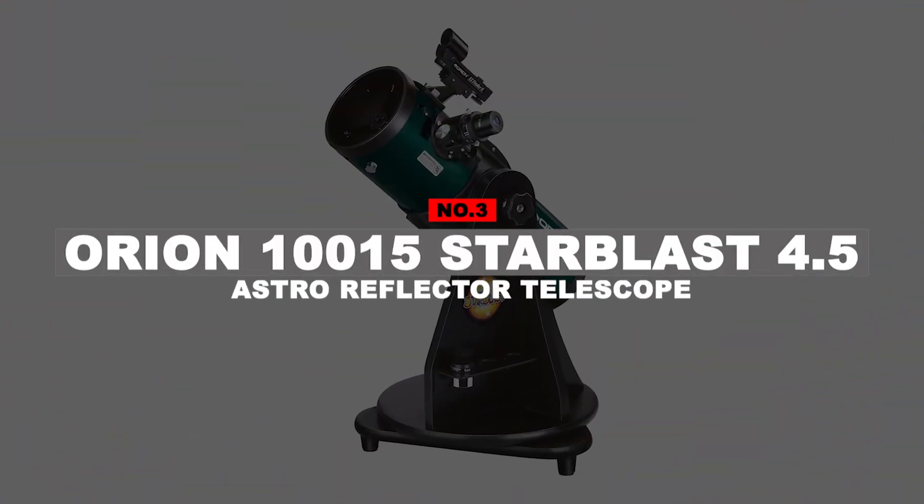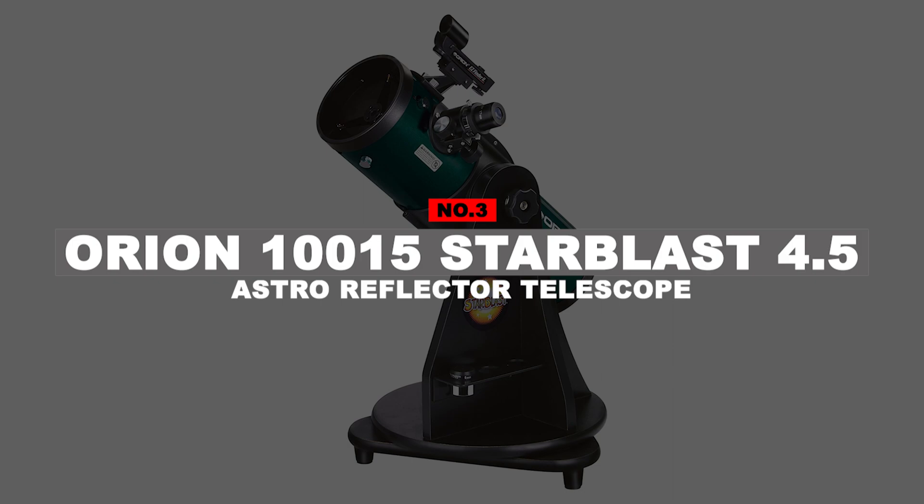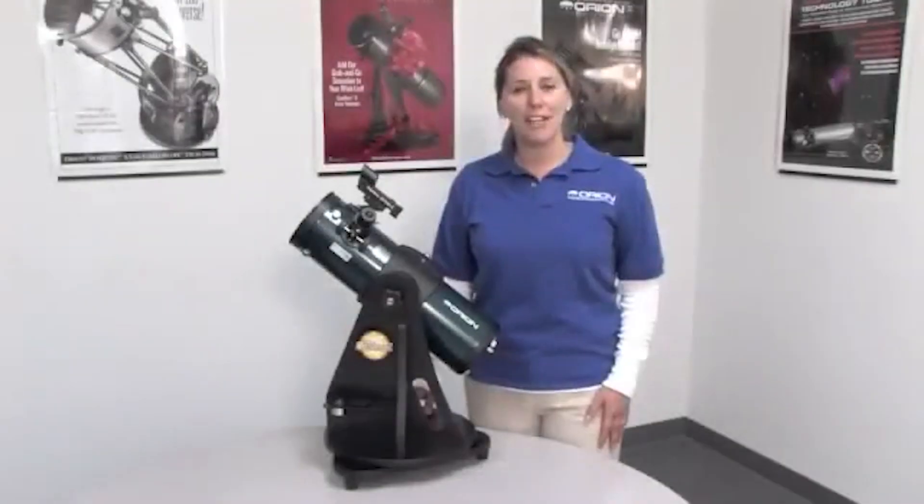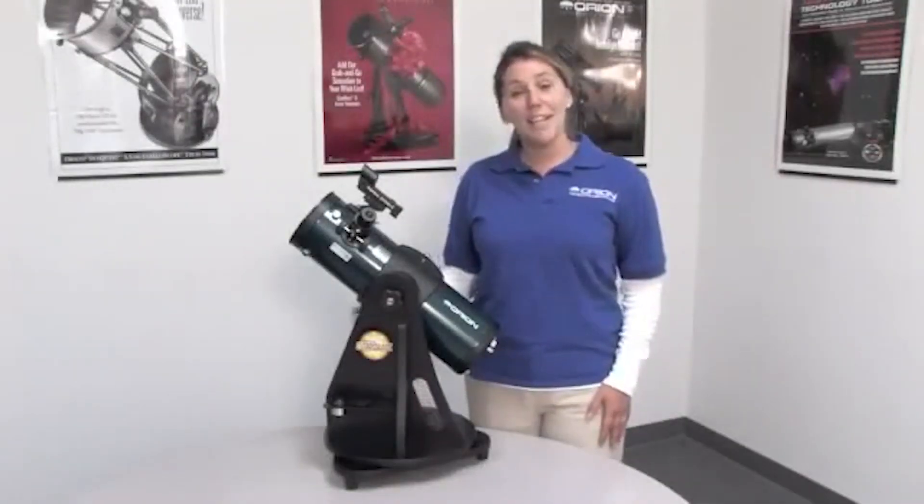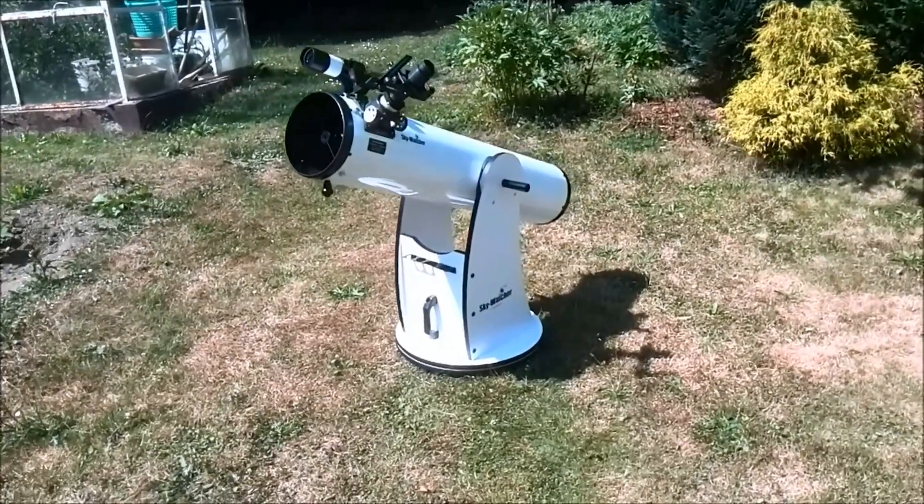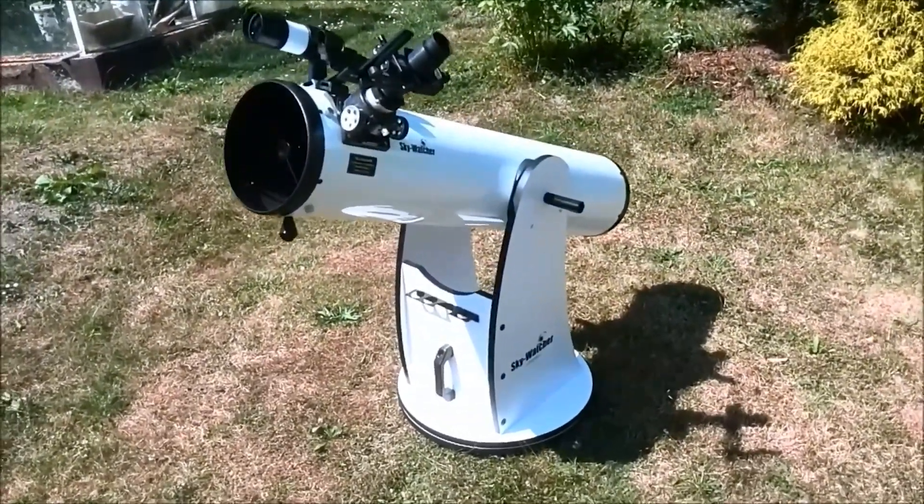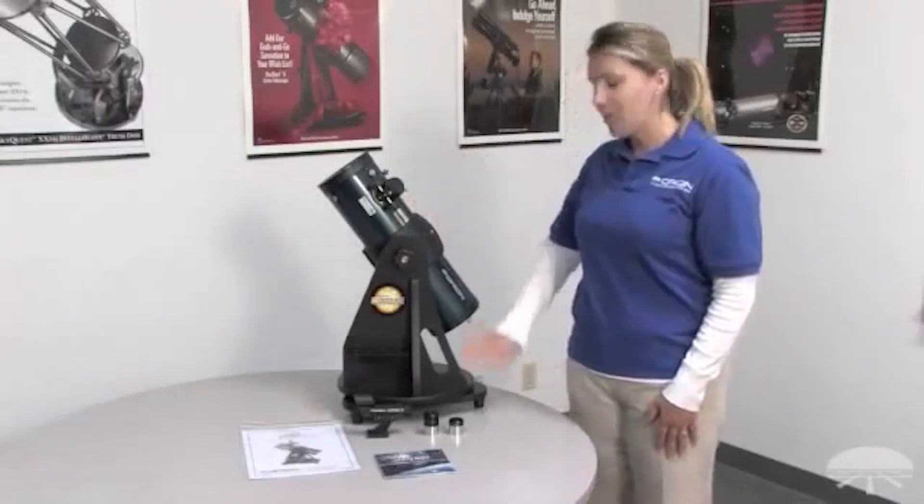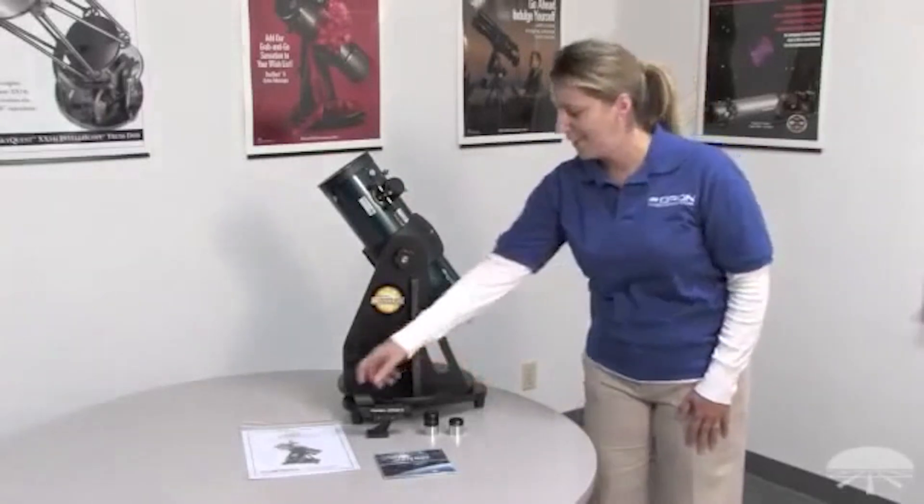Number 3. Orion 10015 Star Blast 4.5 Astro Reflector Telescope. If you want a telescope and you want one that can give excellent views, without all the frills, Orion's Star Blast 4.5 Astro Reflector is a favorite among beginner astronomers, due to its low price and the fact that it's been in the scene for around 15 years.